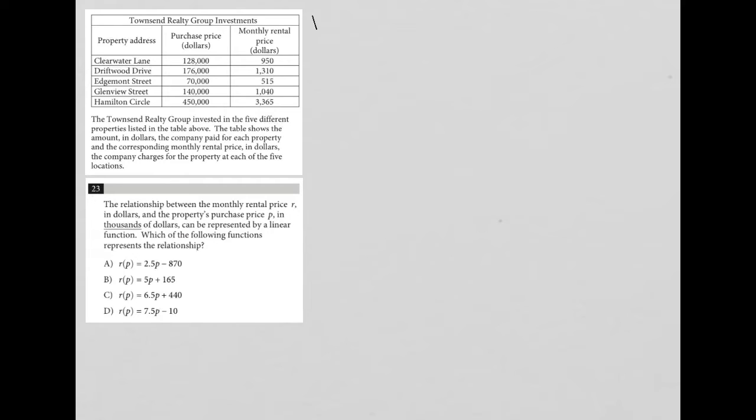So this question is a diagram question. I say that because of the table that's provided here. So let's take a look at the table and see what information is being provided to us. So it looks like this is all about the Townsend Realty Group investments. Our first column is property address. Next, we have purchase price in dollars. And next, we have monthly rental price in dollars.